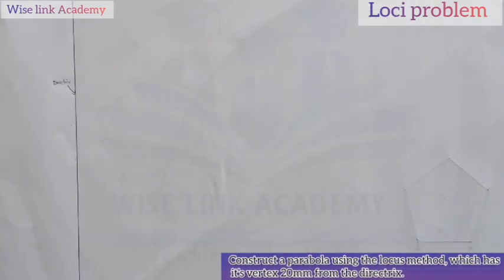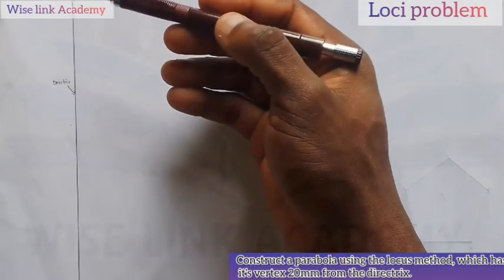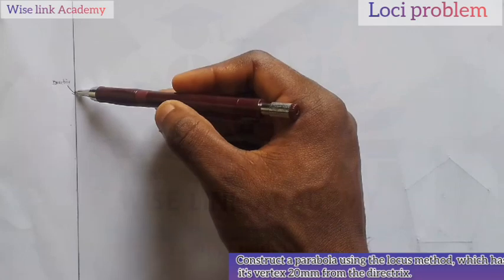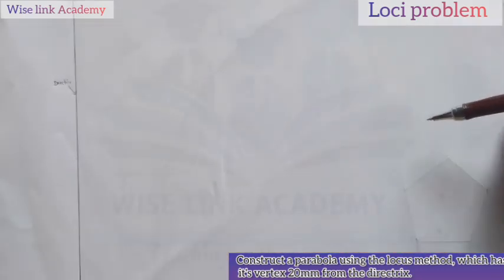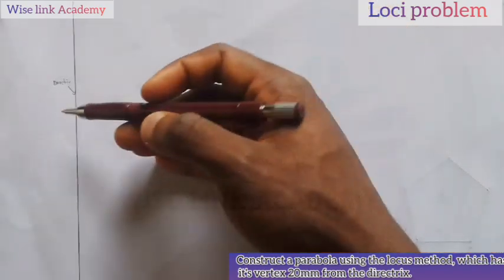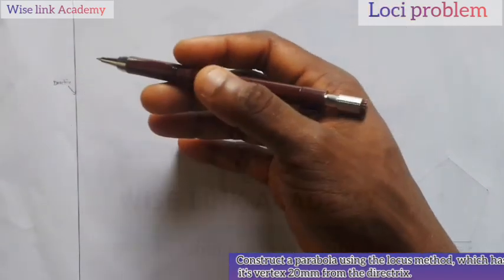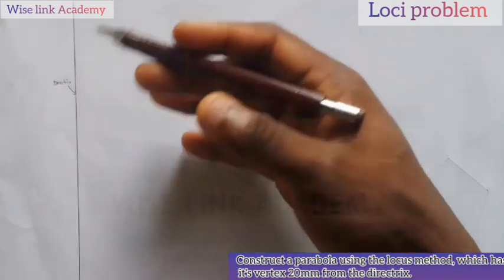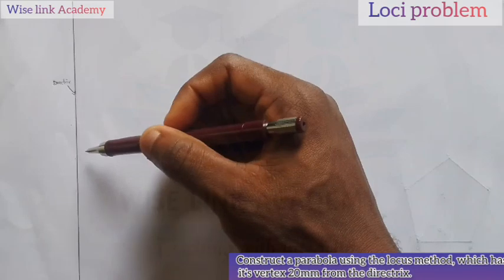Now, next up, in some cases, they will give you directrix. Maybe, let's say, they might give you 100. So, note that your horizontal line you are drawing will be 50. But in this case, we are not given the dimension of the directrix. We are only given vertex. So, just draw horizontal line this way. This horizontal line is our directrix.